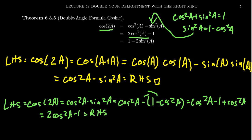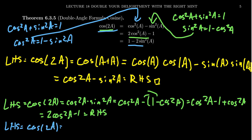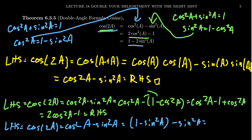We can do the same trick for the third version. To prove cosine of 2a equals 1 minus 2 sine squared of a, take the Pythagorean relationship and solve for cosine squared: cosine squared a equals 1 minus sine squared a. Substituting into cosine squared a minus sine squared a, we replace cosine squared with 1 minus sine squared a, then combine like terms to get 1 minus 2 sine squared of a, which equals the right-hand side.